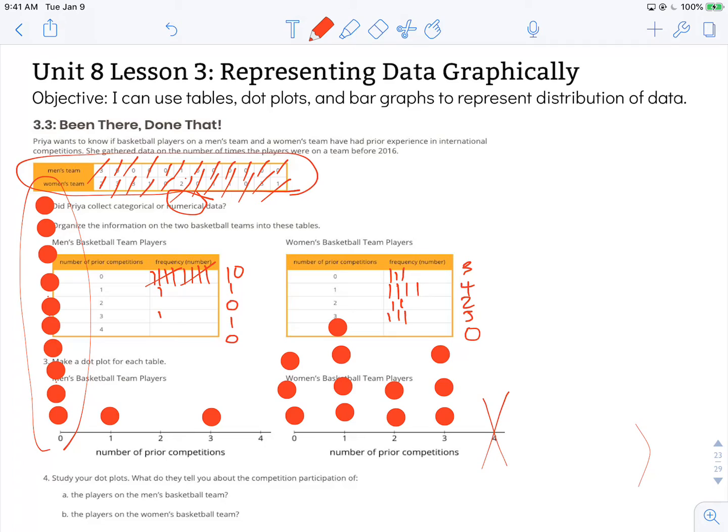So number four says study your dot plots. What do they tell you about the competition participation of the players on the men's basketball team? So we can say very confidently that almost all have not competed internationally before. And only two players, two out of the twelve players, are returning competitors having competed internationally before.